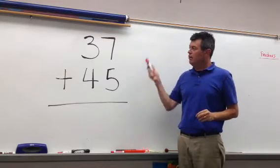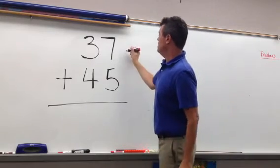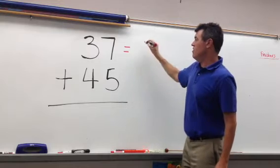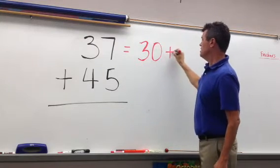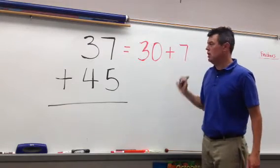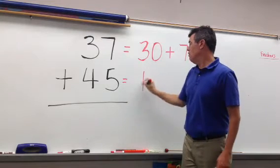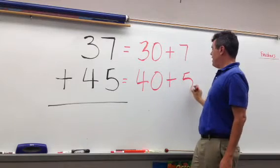So what we're looking for tonight in a problem like this, for example, 37. What the kids need to know is that 37 is the same thing as 30 plus 7. We did this several times today, so they know how to do this. And you take a number like 45, and 45 becomes 40 plus 5.